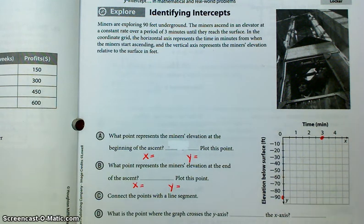As we walk through these examples, I think you're going to get an idea of what they're talking about. So we've got miners exploring 90 feet underground, and the miners ascend in an elevator at a constant rate over a period of 3 minutes until they reach the surface. In the coordinate grid, the horizontal axis represents the time in minutes, and the vertical axis represents the miner's elevation.